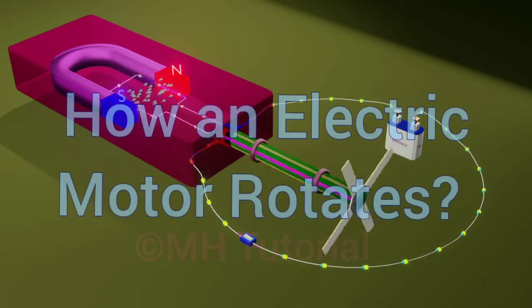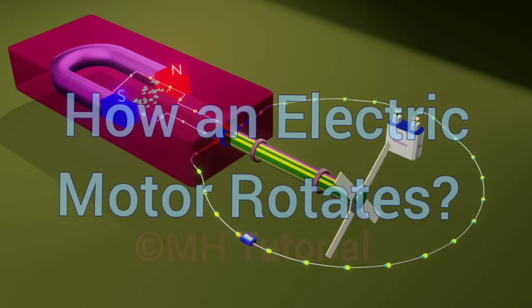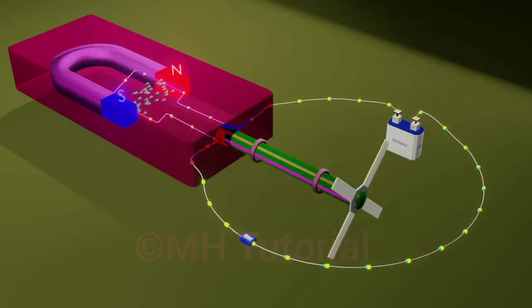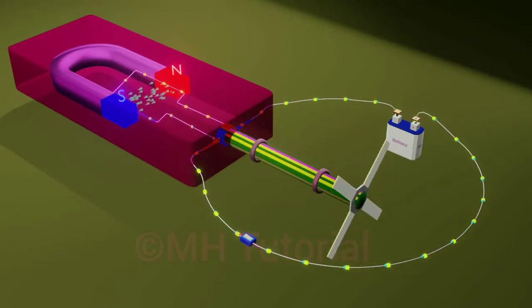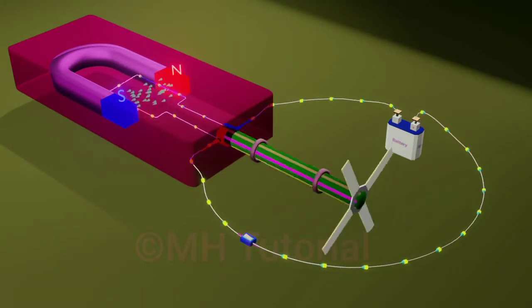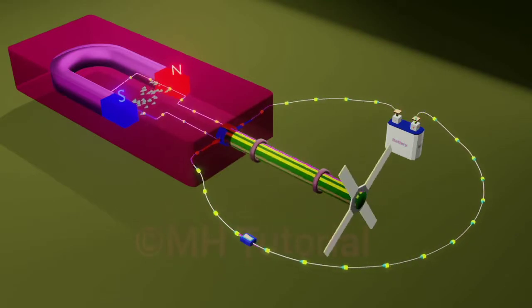How an electric motor rotates - you will be able to explain it to anyone after watching this animation video. The motors found in fans or other machines are a little complicated. Motor makers produce complex models to keep many factors such as performance, power consumption, durability, etc. at an optimum level.